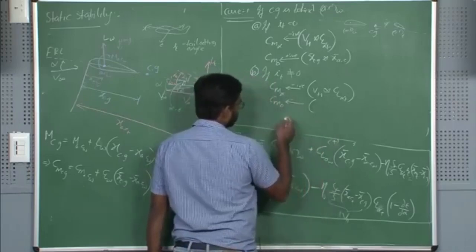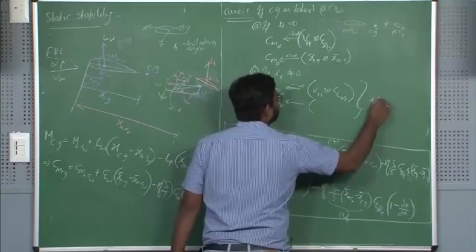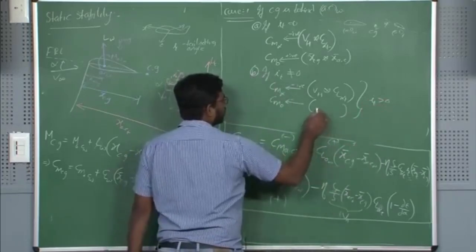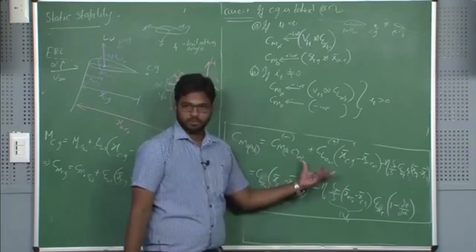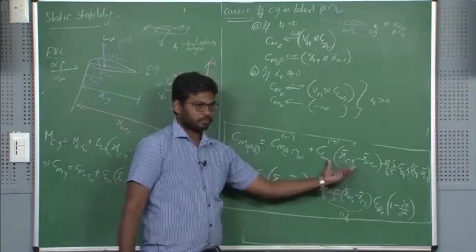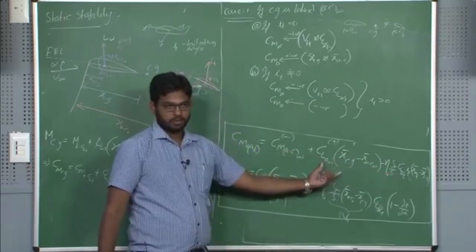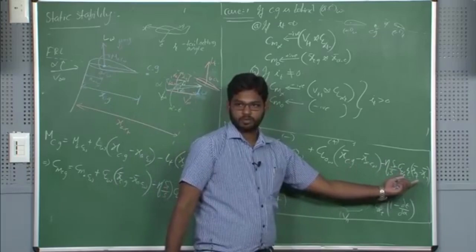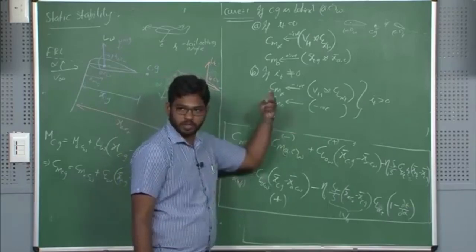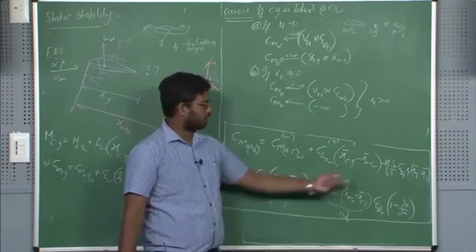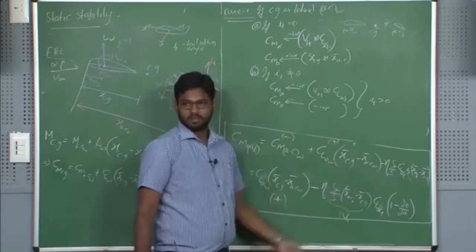When i_t is greater than 0, CM_0 will become negative. If you fix the CG and AC for the case where i_t is 0, and then say you have i_t positive, this becomes negative. Initially you had fixed a certain CM_0; that CM_0 decreases — that is the contribution when i_t is positive. So compared to that, you need to increase the CG-to-AC distance.